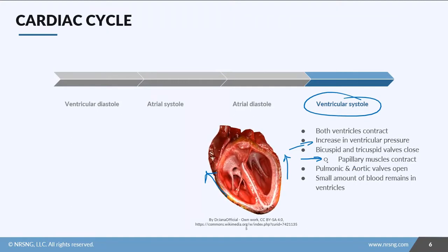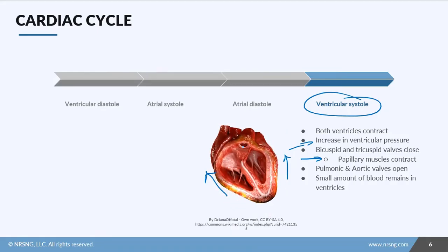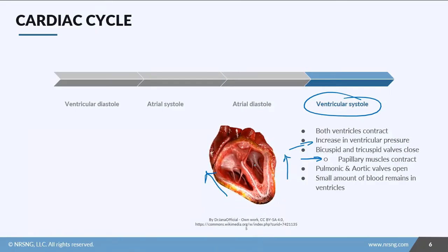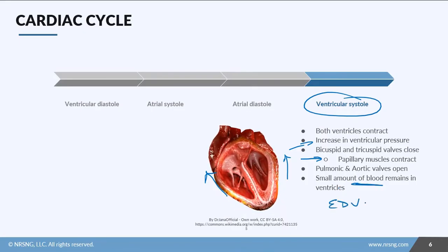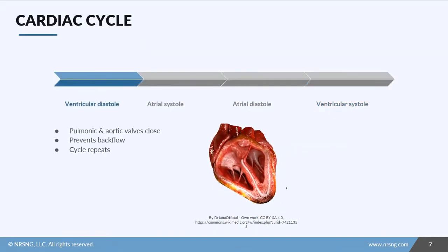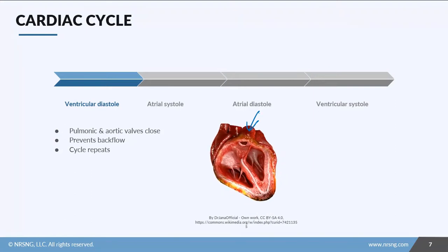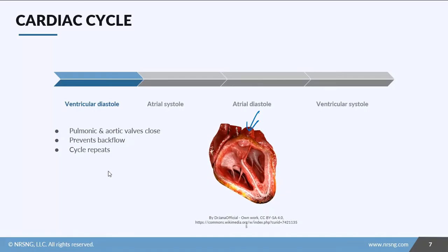Once those AV valves close, the pulmonic and aortic valves open — I'll show you the pulmonic valve here — and all the blood leaves the ventricles to their respective destinations. A small amount of blood remains in the ventricles, known as end-diastolic volume, or EDV. Once the blood is out, the pulmonic and aortic valves close to prevent backflow from the pulmonary artery or the aorta back into the ventricles, and then the cycle starts over.